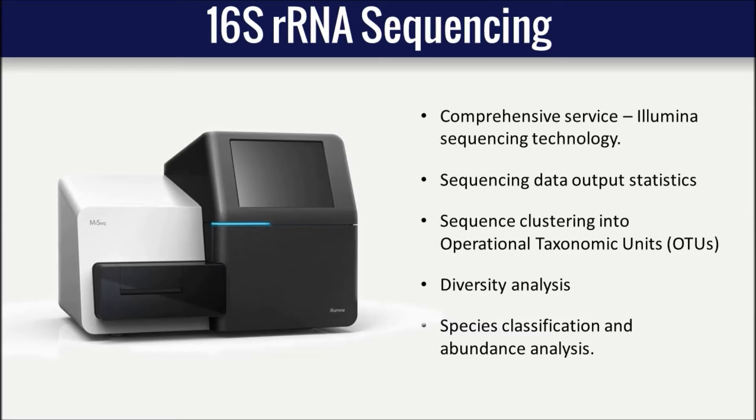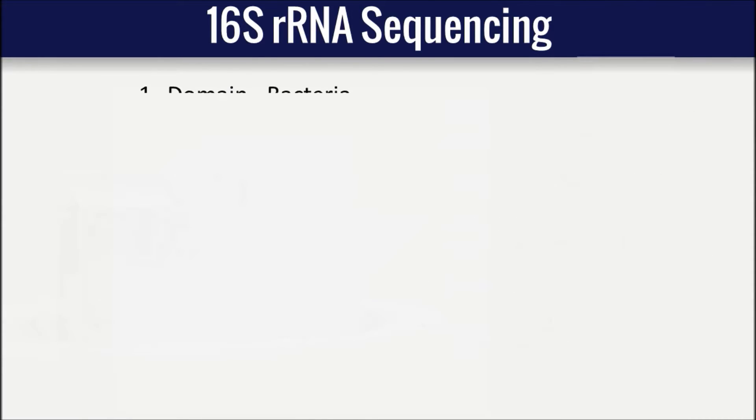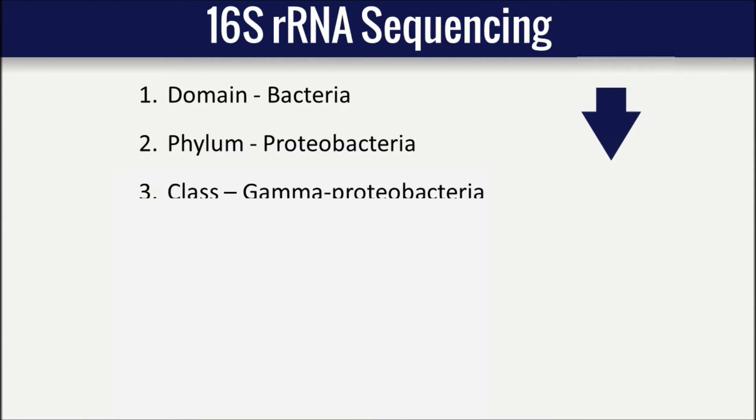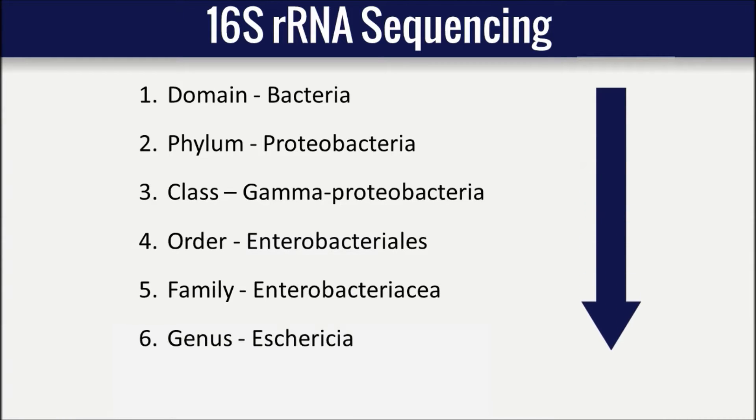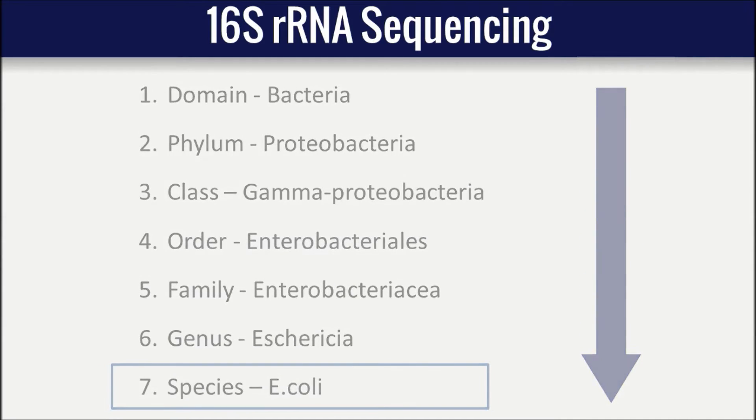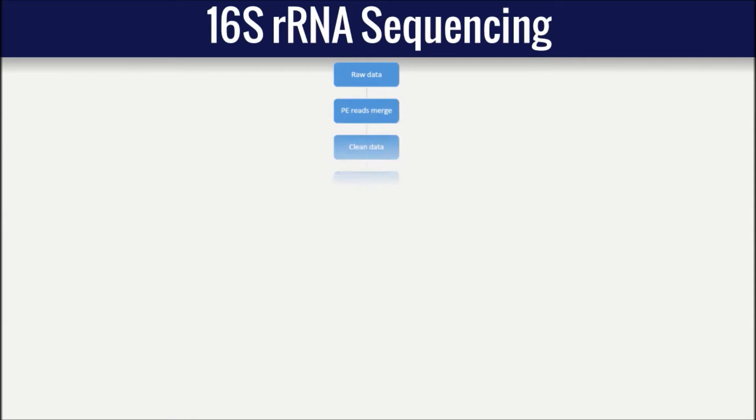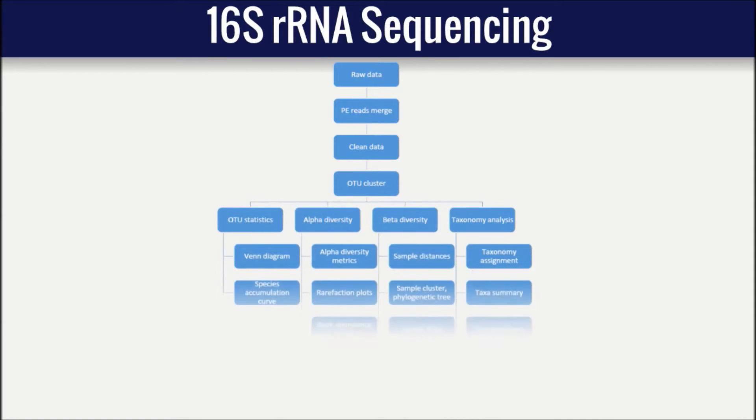An important distinction of LC Sciences' service is that we perform the classification analysis on seven taxonomy levels, all the way down to species level. Species level ID is enabled through the curation of several genomic databases and advanced bioinformatics.